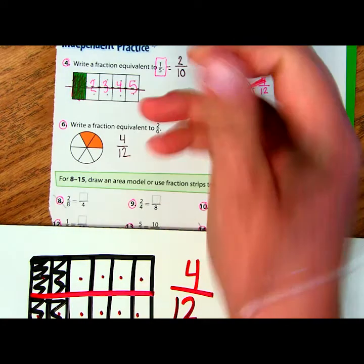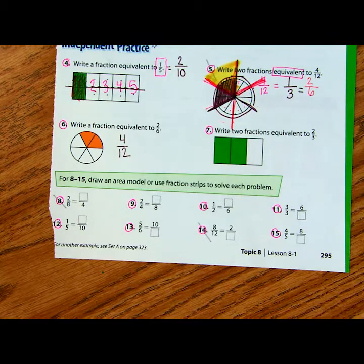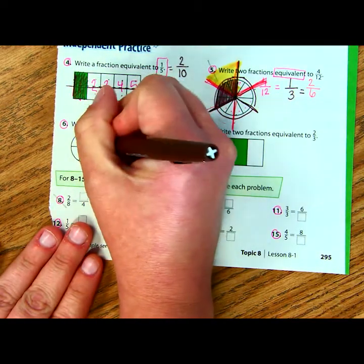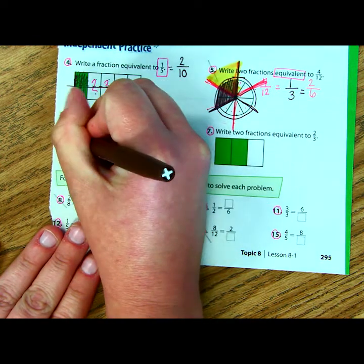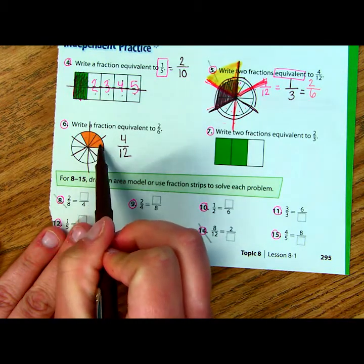Some of you may have looked at this model that's already provided here for you. And maybe you just cut each of these slices, if it's like a pizza, in half. And then you saw that in this orange area, there were 1, 2, 3, 4 equal parts shaded.